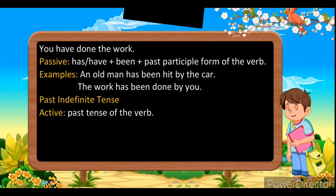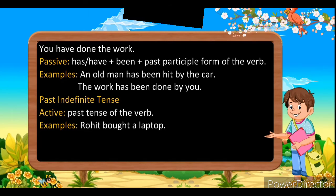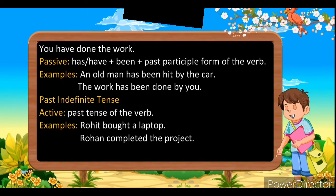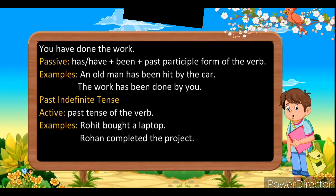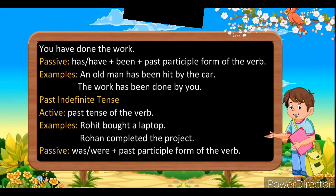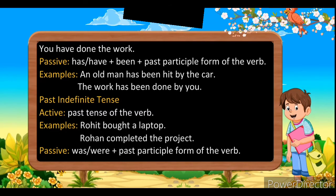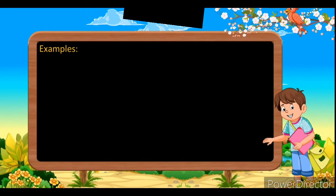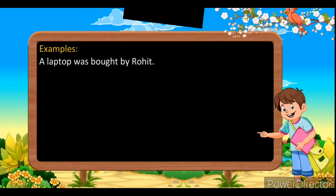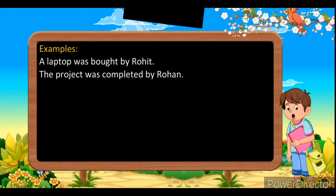Now let's move to the past. In past simple active voice, use the past form of the verb. For example: 'Rohit bought a laptop'; 'Rohan completed the project.' To change it into passive, use was/were plus the verb's third form. Examples: 'A laptop was bought by Rohit'; 'The project was completed by Rohit.'